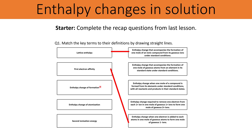The enthalpy change of formation is the enthalpy change when one mole of a compound is formed from its elements under standard conditions with all reactants and products in their standard states. The enthalpy change of atomization is the enthalpy change that accompanies the formation of one mole of gaseous atoms from an element in its standard state under standard conditions.